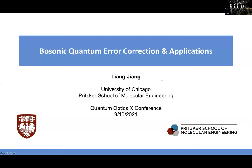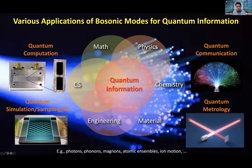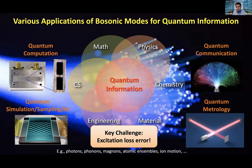Today I'm going to talk about bosonic quantum error correction and the various potential applications. Bosonic systems play an important role in various quantum information tasks, from computing, communication, metrology, and simulation. One of the major challenges for using bosonic systems for quantum information processing is excitation loss.